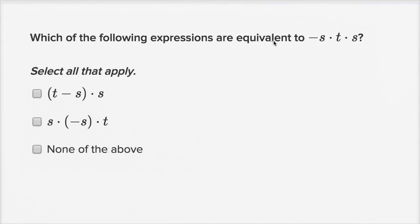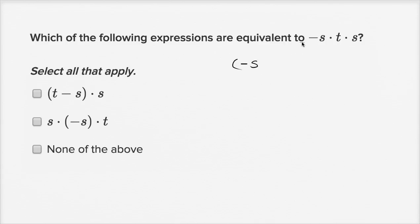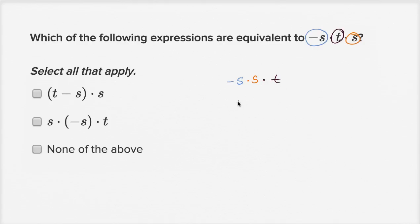Which of the following expressions are equivalent to negative s times t times s? Select all that apply. Here we can't just evaluate and see what these equal — we should do a little bit of manipulation of these variables. Well, we could change the order in which we multiply these things. We could view this as negative s times s times t, and do any of the choices look like that?